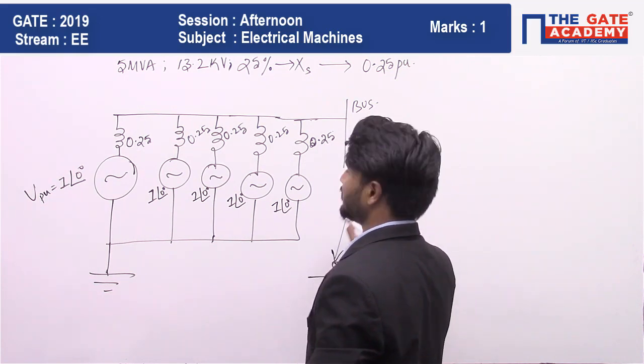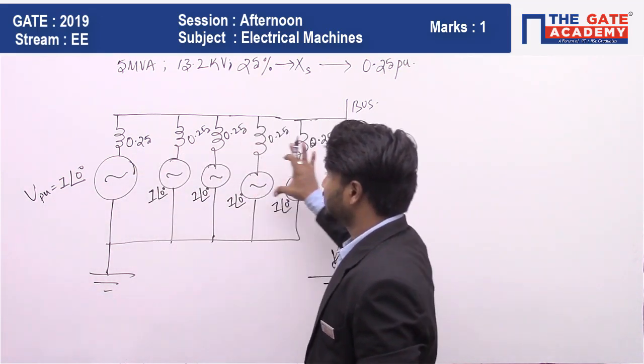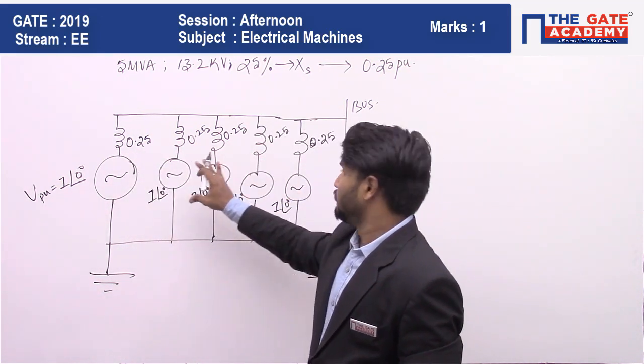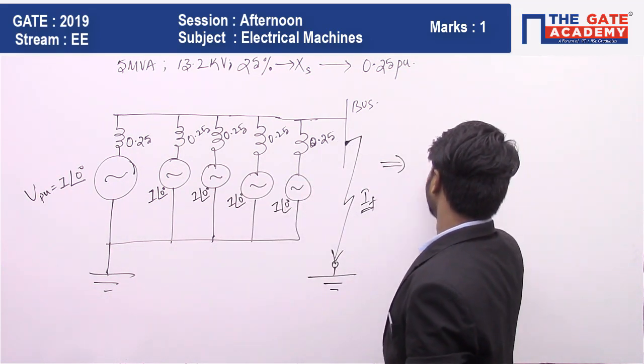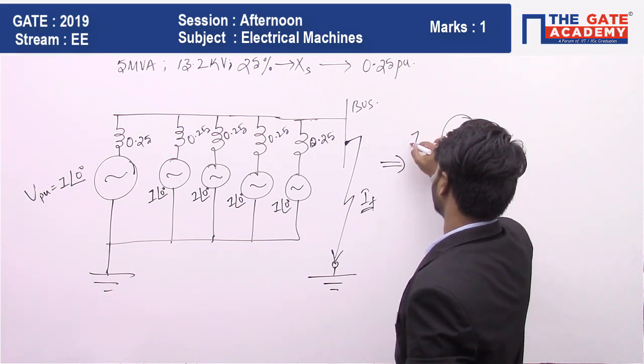So if five such alternators are connected in parallel, you can see all these voltages are the same, which means these can be replaced by a single voltage source like this.